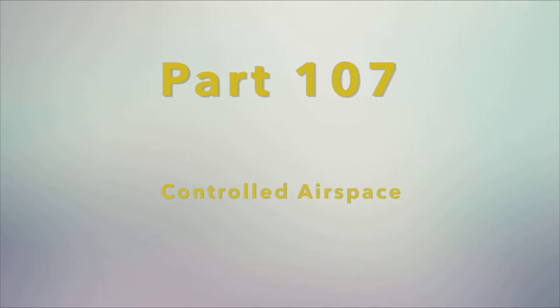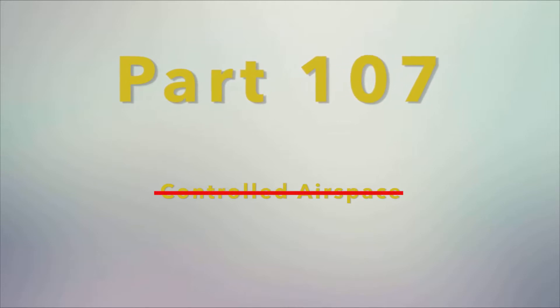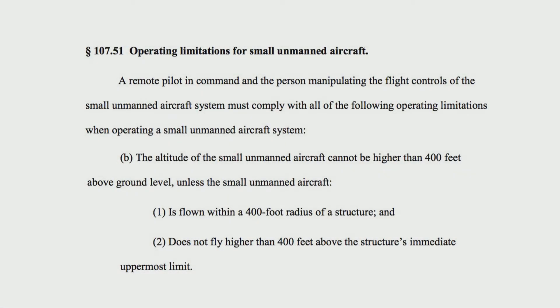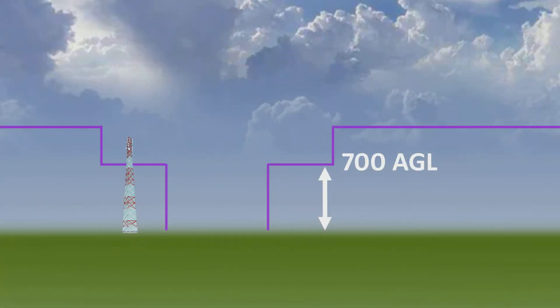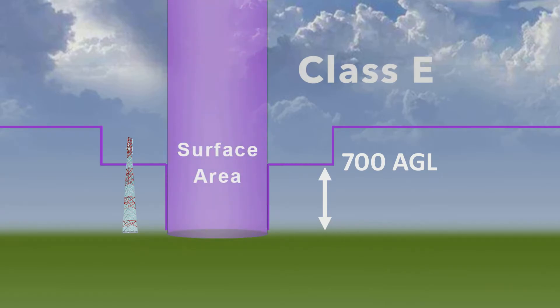The common argument is that the regulations state that a remote pilot must have authorization to operate in controlled airspace — but this is false. In fact, in the published Part 107 regulations, nowhere do the words 'controlled airspace' even exist. This all comes into play in the case of tower inspections. Part 107.51 explains that you may fly higher than 400 feet if you remain within 400 feet of a tower or structure. As long as you remain within this 400-foot radius, you may climb up to 400 feet above the top of the tower, unless that puts you in an airspace requiring authorization.